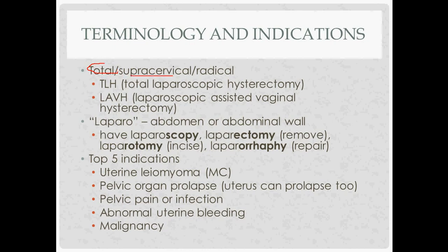Supracervical means leaving the cervix, or at least part of the cervix. Radical refers to taking out the uterus as well as the tubes and ovaries, although that's usually referred to as hysterectomy with bilateral salpingo-oophorectomy to avoid confusion.